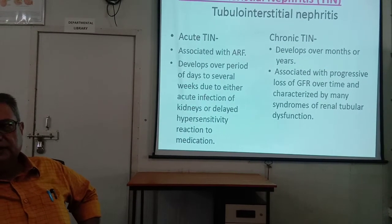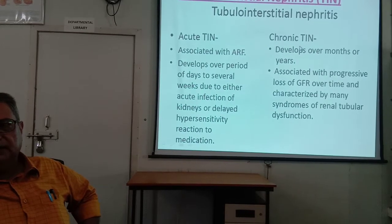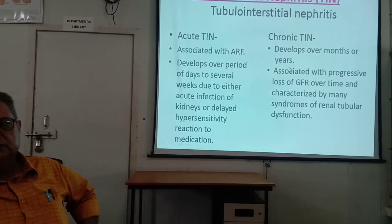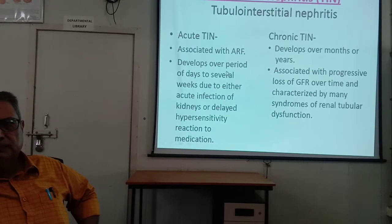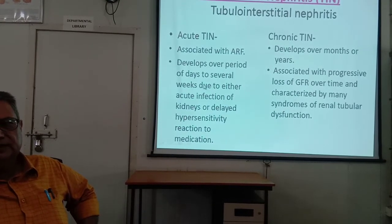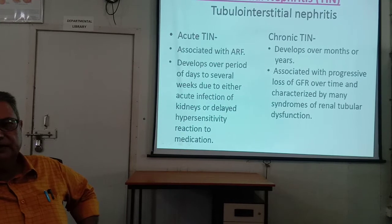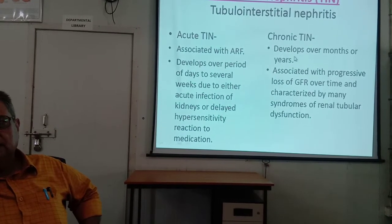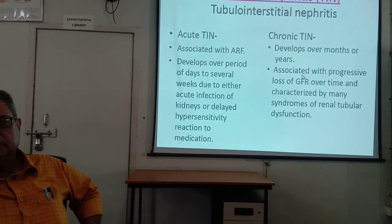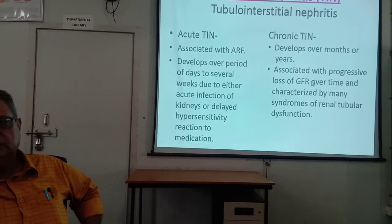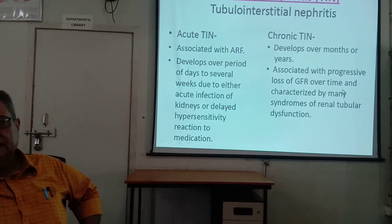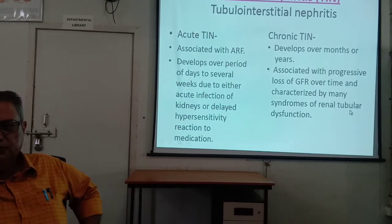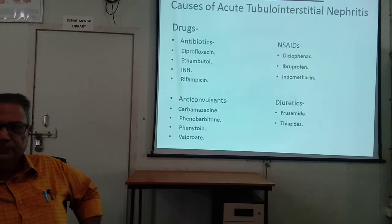Tubulo-interstitial nephritis can be acute or chronic. Acute tubulo-interstitial nephritis is associated with acute renal failure, developing over days to several weeks due to either acute kidney infection or delayed hypersensitivity reaction to medication. Chronic tubulo-interstitial nephritis develops over months to years, associated with progressive loss of glomerular filtration rate and characterized by syndromes of inner tubular dysfunction, uremia, azotemia, and chronic renal failure.